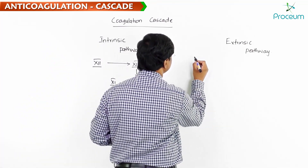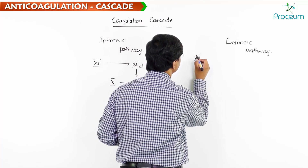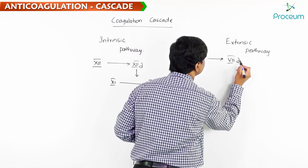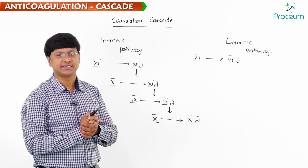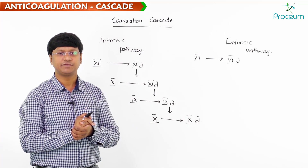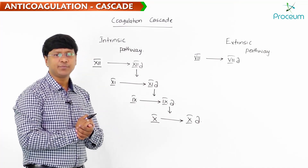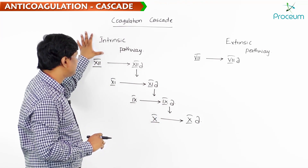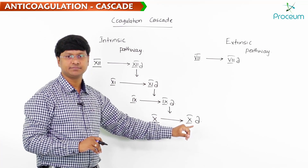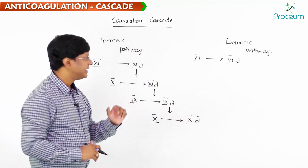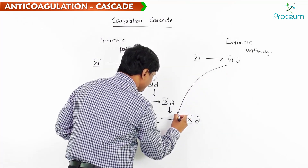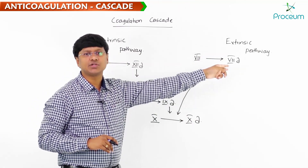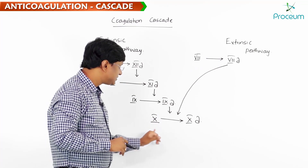In the extrinsic pathway, factor 7 is converted into factor 7A, the activated form of factor 7. Now, it is factor 9A of the intrinsic pathway which converts factor 10 to 10A, and similarly the activated form of factor 7A from the extrinsic pathway will also convert factor 10 to 10A.